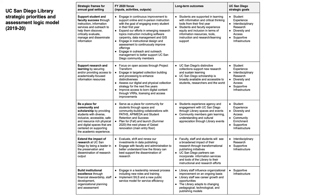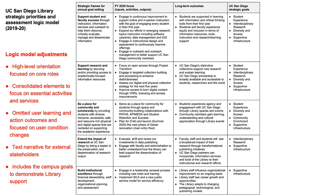Relying on the Kellogg guide, we developed the model you see on your screen. In building our own framework, we implemented several modifications to help us stay focused at the right level in terms of planning. We adopted a high-level orientation and focused on core library roles, rather than on specific services and activities, so that we could capture the whole organization through our five frames for annual goal setting. We also consolidated several model elements to focus on essential activities and services. For instance, we summarized inputs, activities, and outputs in the second column.